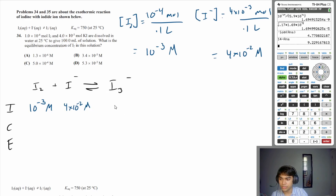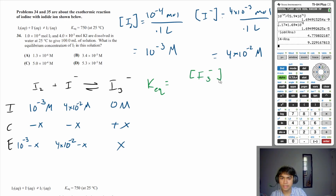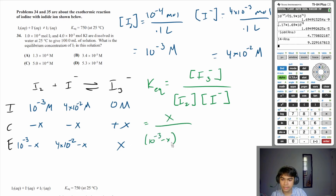The initial concentration of I₃⁻ is 0. The change is −x for each reactant and +x for the product, giving equilibrium concentrations of 10⁻³ − x for I₂, 4×10⁻² − x for I⁻, and x for I₃⁻. The Keq expression is [I₃⁻] / ([I₂][I⁻]) = x / ((10⁻³ − x)(4×10⁻² − x)) = 750.